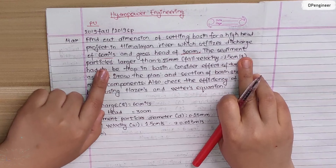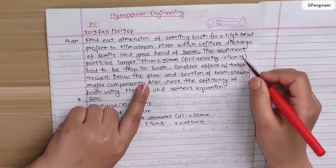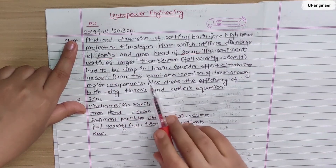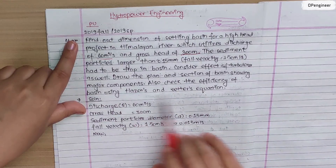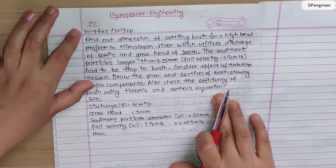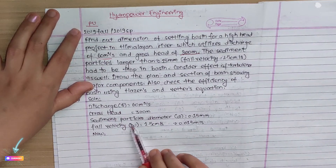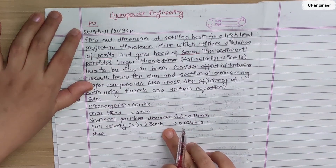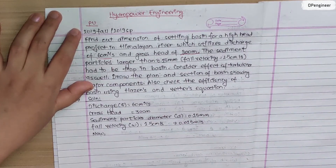Sediment particles larger than 0.15 mm, or with a fall velocity of 1.5 cm per second, have to be trapped in the basin. We also need to consider the effect of turbulence, draw the plan and section of the basin showing major components, and check the efficiency using the Hazen-Williams equation. The discharge is 60 cubic meters per second, gross head is 300 meters, sediment particle diameter is 0.15 mm, and fall velocity is 1.5 cm per second, or 0.015 meters per second.